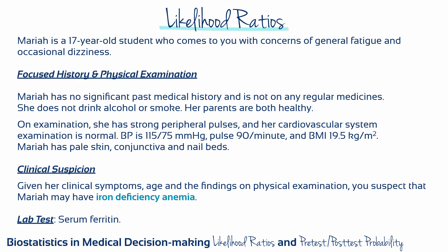Let's talk through an example. Mariah is a 17-year-old student who comes to you with concerns of general fatigue and occasional dizziness. She has no significant past medical history and is not on any regular medicines. She doesn't drink alcohol or smoke and her parents are both healthy. On examination, she has strong peripheral pulses and her cardiovascular system examination is normal. Her blood pressure is 115/75 and her pulse 90 beats per minute. She has a BMI of 19.5, as well as pale skin, conjunctiva and nail beds. Given her clinical symptoms, age, and the findings on physical examination, you suspect that Mariah may have iron deficiency anemia and want to proceed by ordering a serum ferritin lab test.